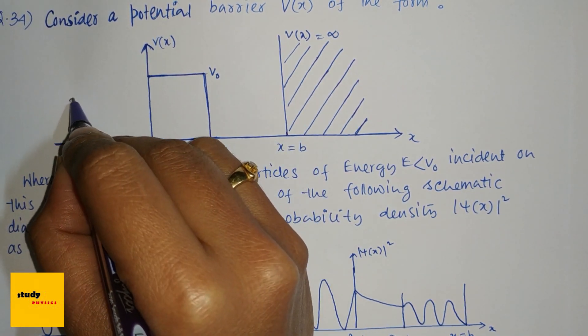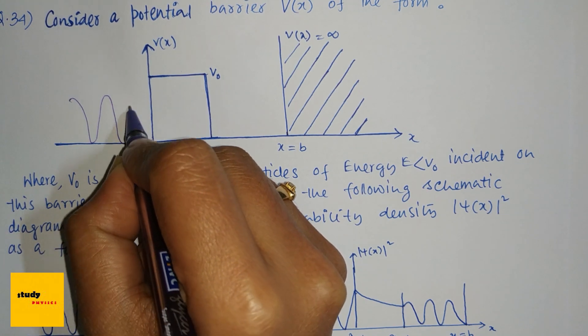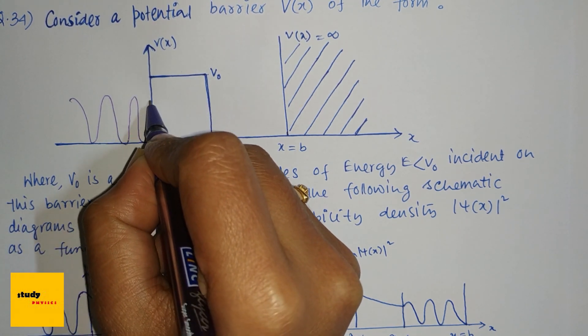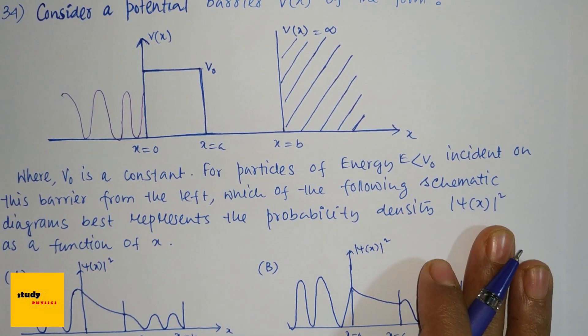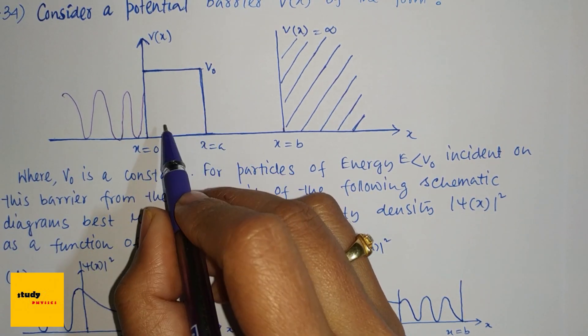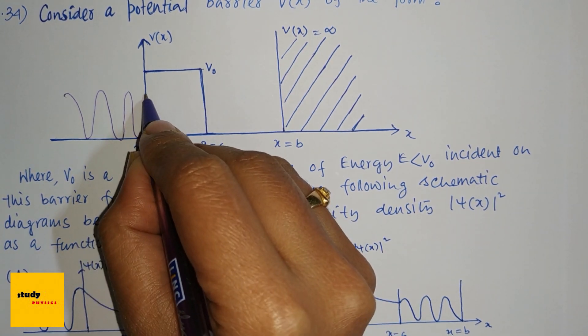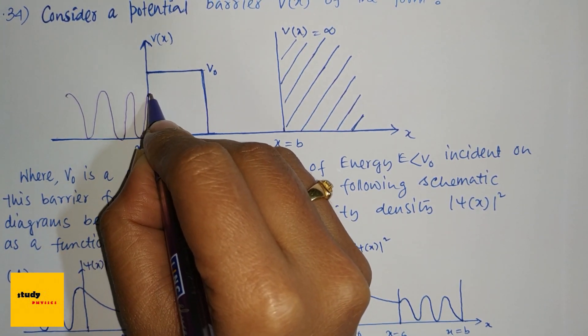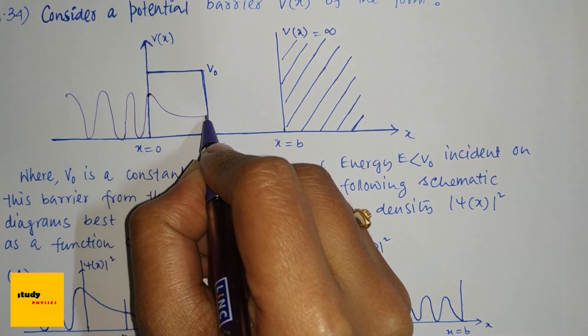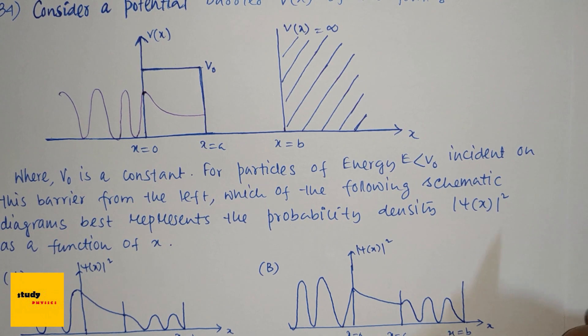So this will be like this. Okay, now when the potential is V₀, this probability density is going to decrease like decaying, because here the particles of energy E is less than V₀.